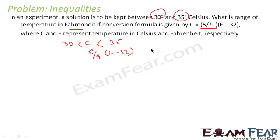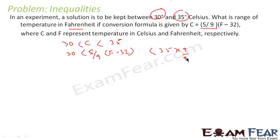We replace C and get the same inequality: greater than 30 and less than 35. We'll multiply the whole thing by 9/5 — because we want to cancel out the 9/5 already there. So we cut this 9/5.